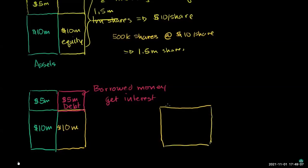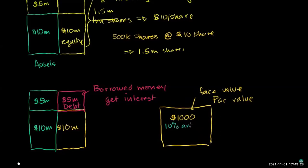The company issues bond certificates with a face value of $1,000 — sometimes called par value — and states the interest it will pay, say a 10% annual coupon. It's called a coupon because historically bonds had physical coupons attached that the owner could rip off and redeem for their interest payment. The coupon rate means paying $100 a year. The bond also has a maturity date, when the company pays back not just interest but the entire principal — the full face value.